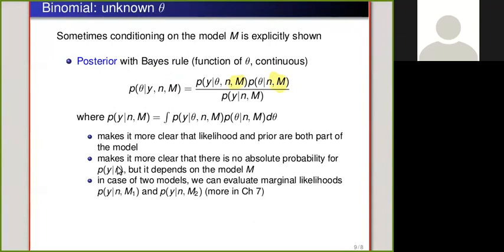It also makes it more clear that there's no absolute probability. So something that y could depend just on number of trials, but it also depends on the model M. In this case of binomial model, this is not so easy to see the difference, but when we go to more complex models, it's more clear that it's sometimes helpful to remind about this.